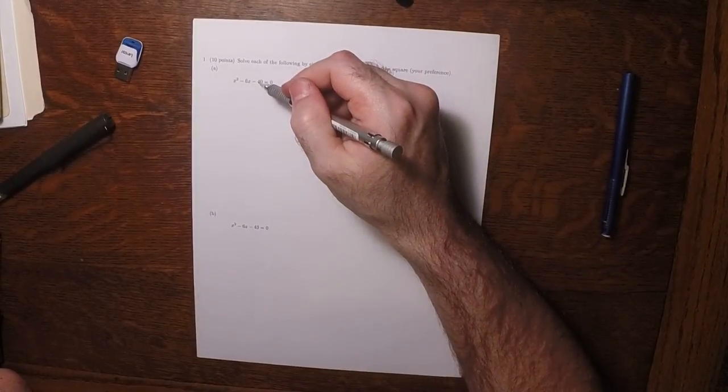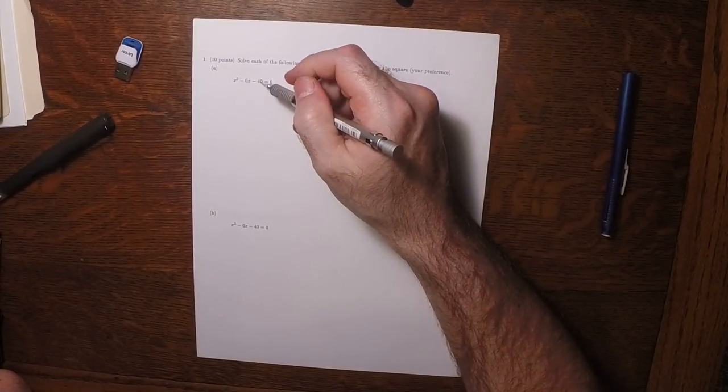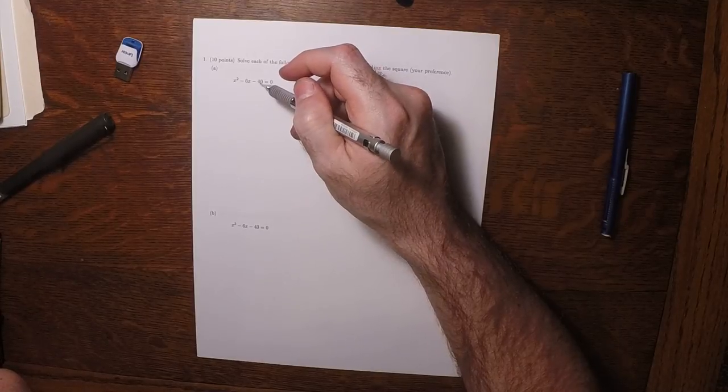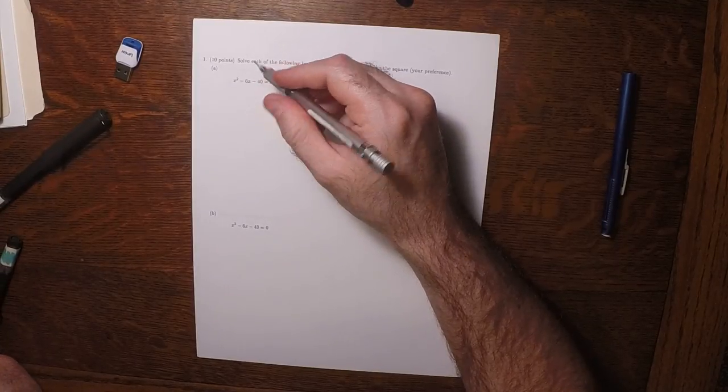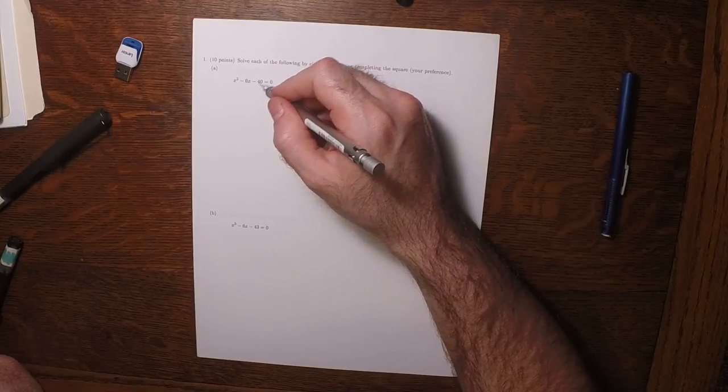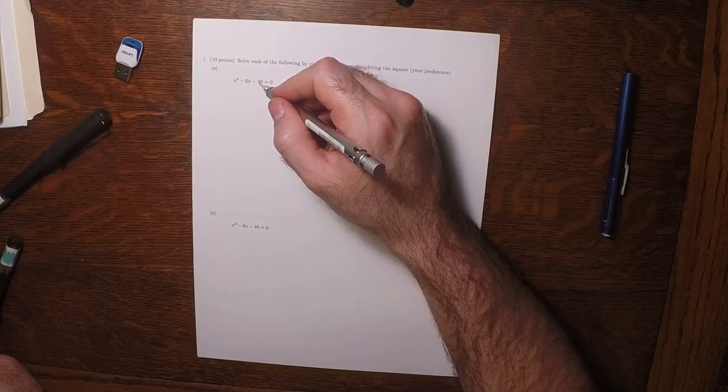Can we think of two numbers whose product is negative 40 and whose sum is negative 6? Well, 1 and 40, no. 2 and 20, no. 4 and 10?